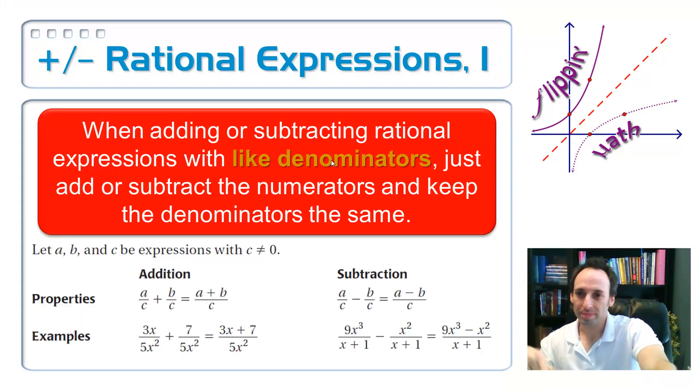So when I'm adding or subtracting rational expressions, if they have the same denominator, like denominators, you keep that denominator the same and then you add or subtract the numerators. See the denominator is the same, so you keep it the same and you just add up the tops.